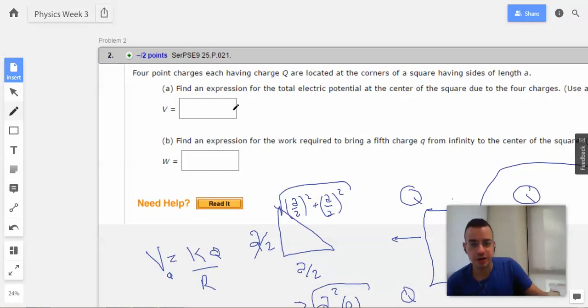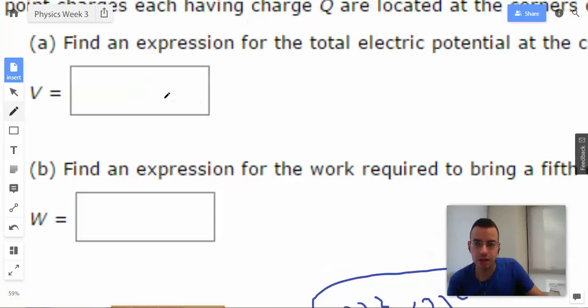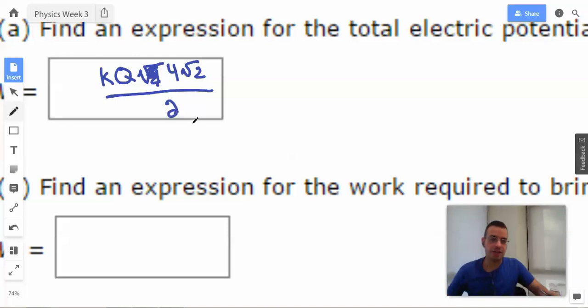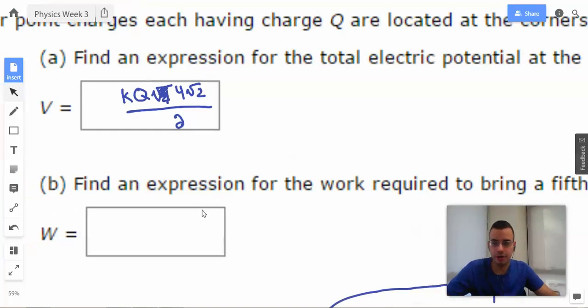So the potential energy, the electric potential potential energy difference, will be 4 times the square root of 2, KQ over A. So for this guy right here, zoom in, ultra-zoom, KQ, square root of 4, no, 4 times the square root of 2 over A. And the A is specifically not squared. Okay?